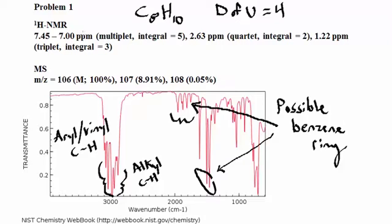Now let's look at the proton NMR data. So the first one that we have here, between 7.45 and 7 ppm, a multiplet with an integral of 5. And so this chemical shift is in the range that would be indicative of a phenyl group, which would have five different hydrogen atoms. And so that matches this integral of 5 here.